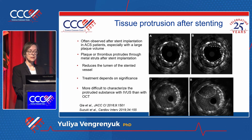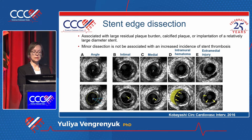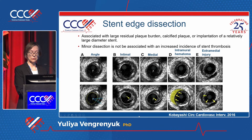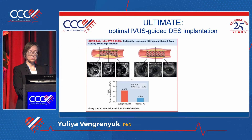Tissue protrusion reduces the lumen of the stent and depending on severity may require intervention. Another very important finding is stent dissection — associated with large residual plaque burden, calcified plaque, or implantation of a relatively large stent diameter. Dissection can be minor, going only through the intima, or it can extend through the media and even deeper, which is significant.